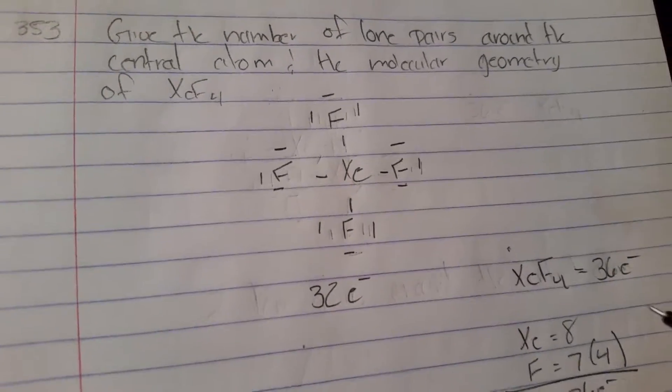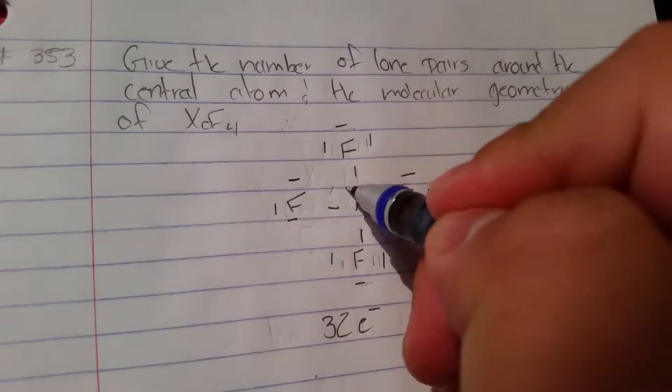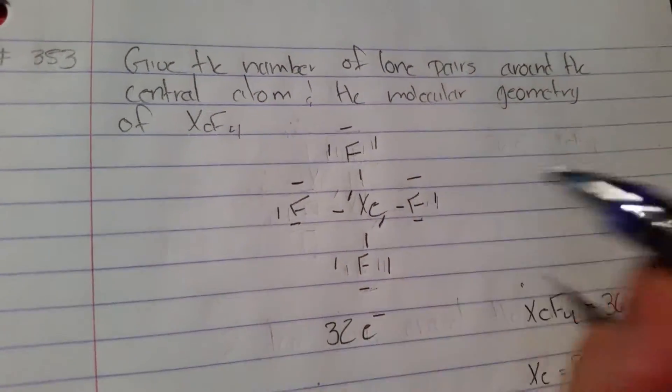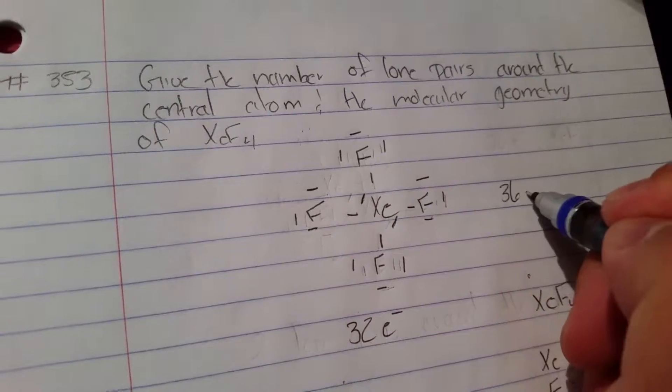Now we need to add four more electrons. And where are we going to put them? We're going to put them around the central atom. We're going to put two here and two here. So now we have our 36 electrons.